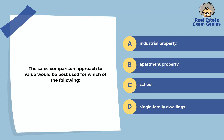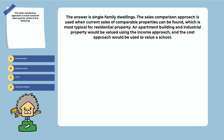The sales comparison approach to value would be best used for which of the following? Industrial property, apartment property, school, or single family dwellings. The answer is single family dwellings. The sales comparison approach is used when current sales of comparable properties can be found, which is most typical for residential property. An apartment building and industrial property would be valued using the income approach, and the cost approach would be used to value a school.